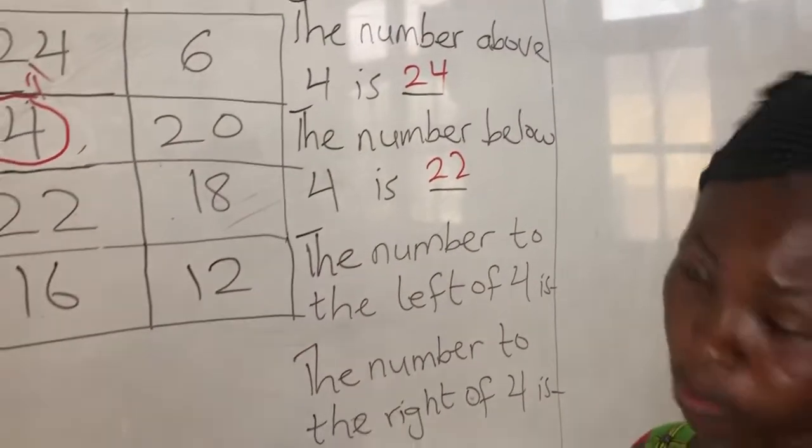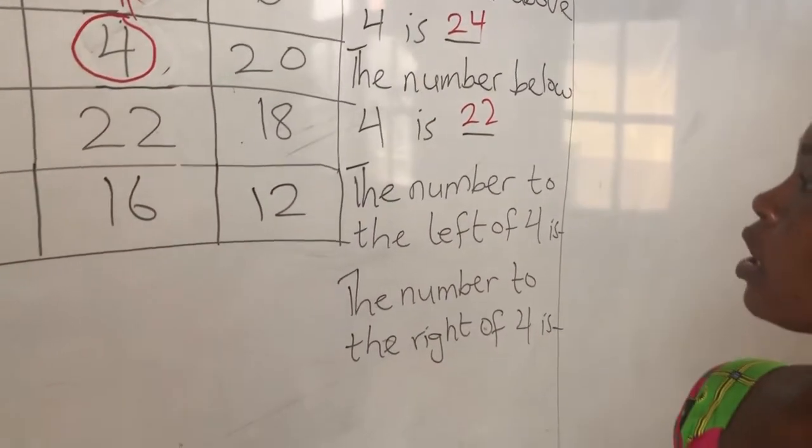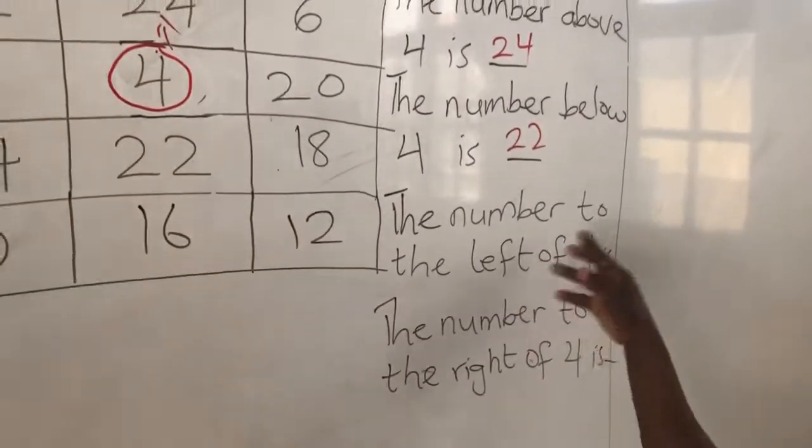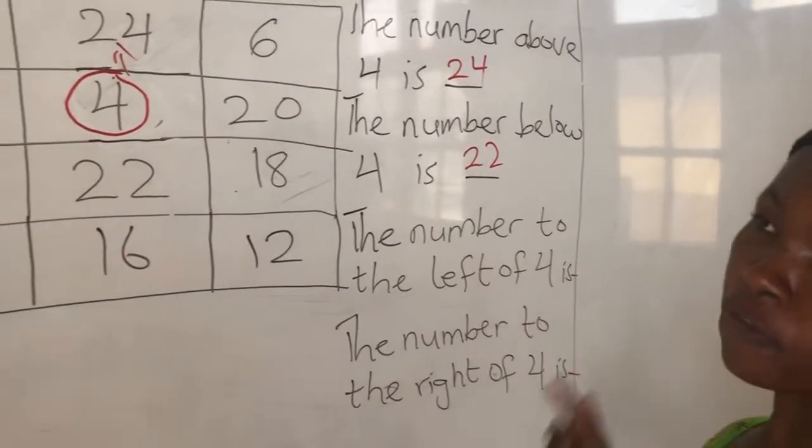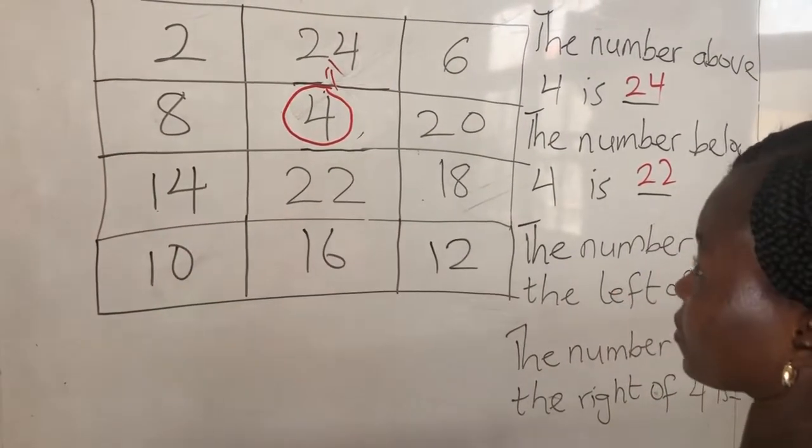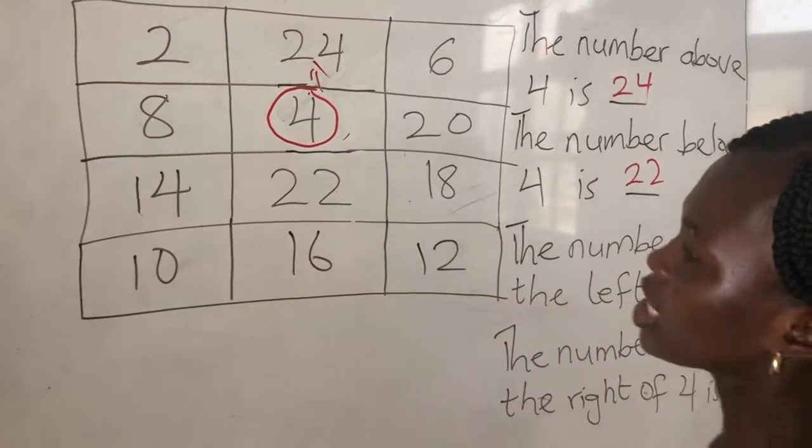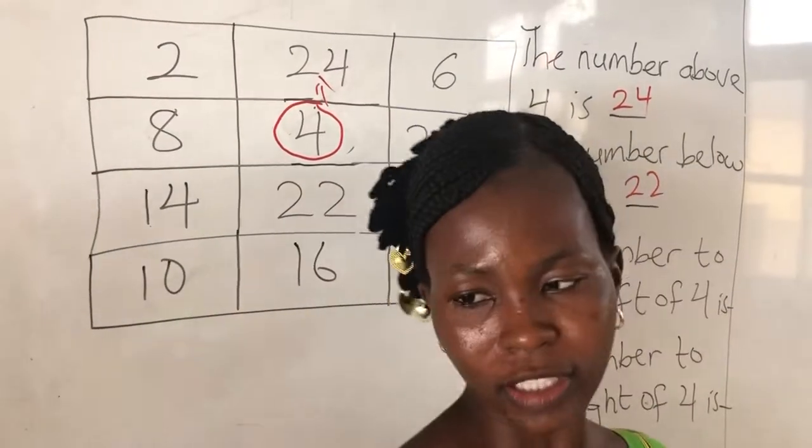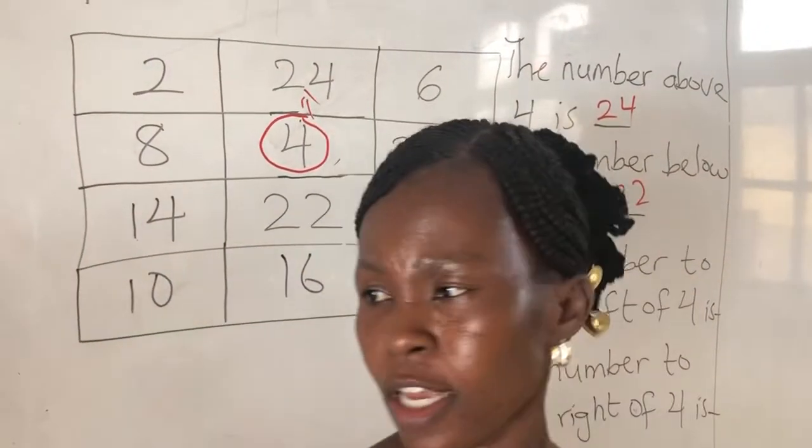This same 4, because it is circled. The number to the left of 4. As I stand this way, this is my left, and this is my right. If I should face you, this is my right and this is my left.